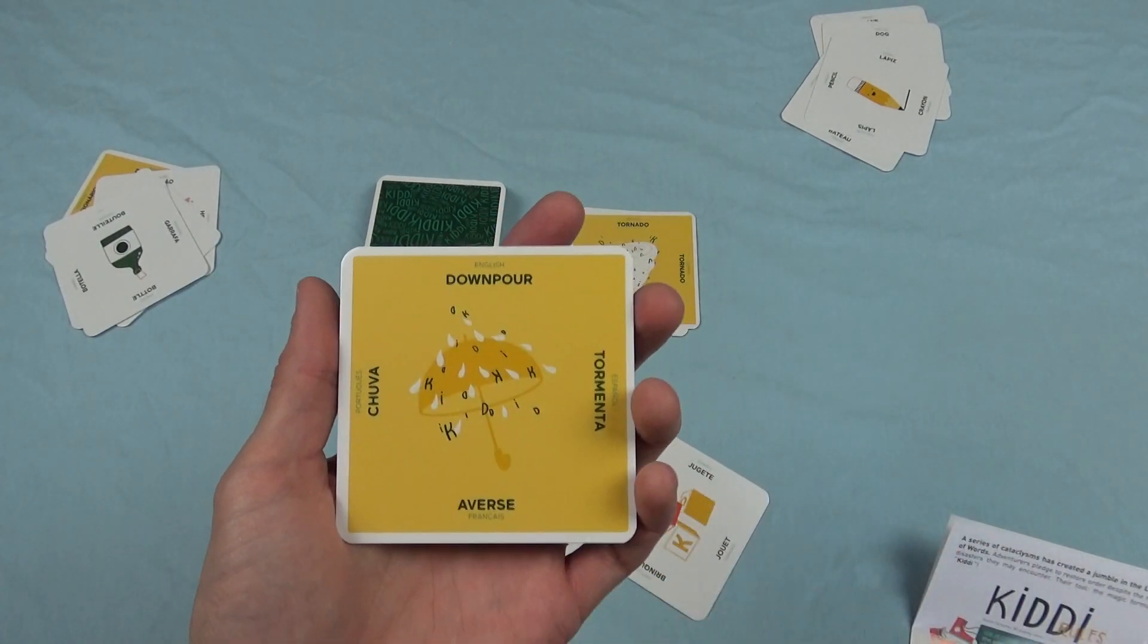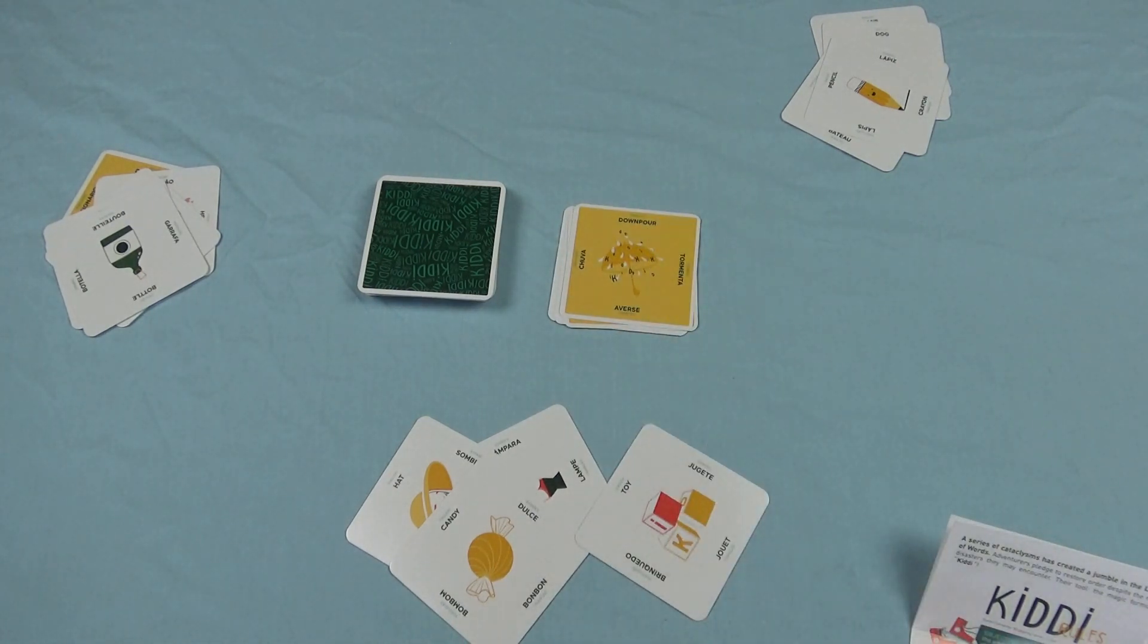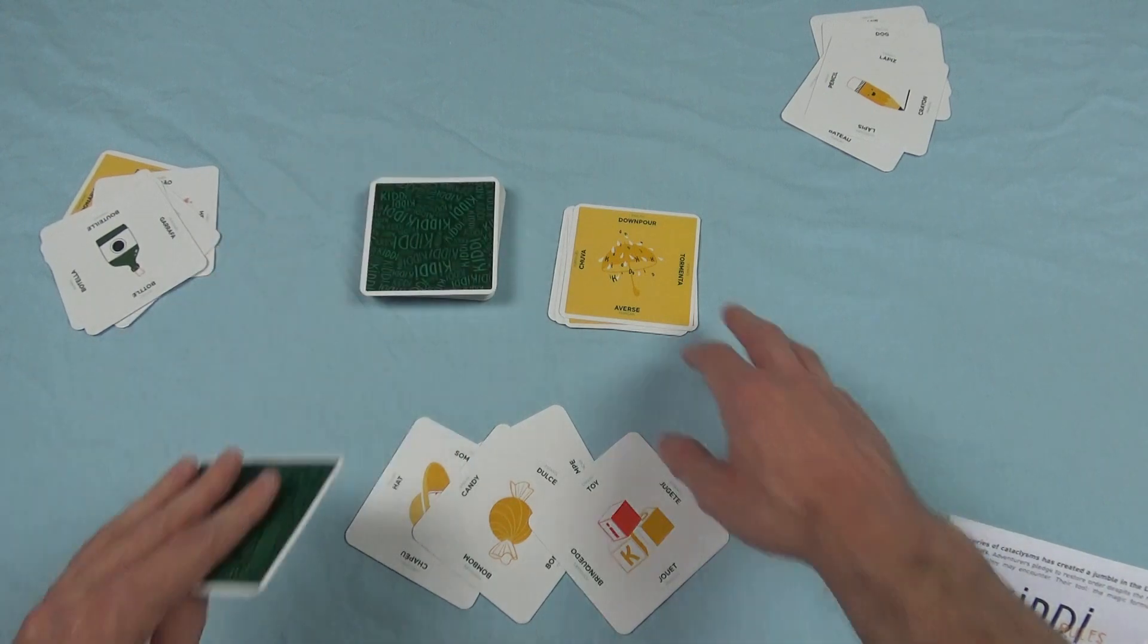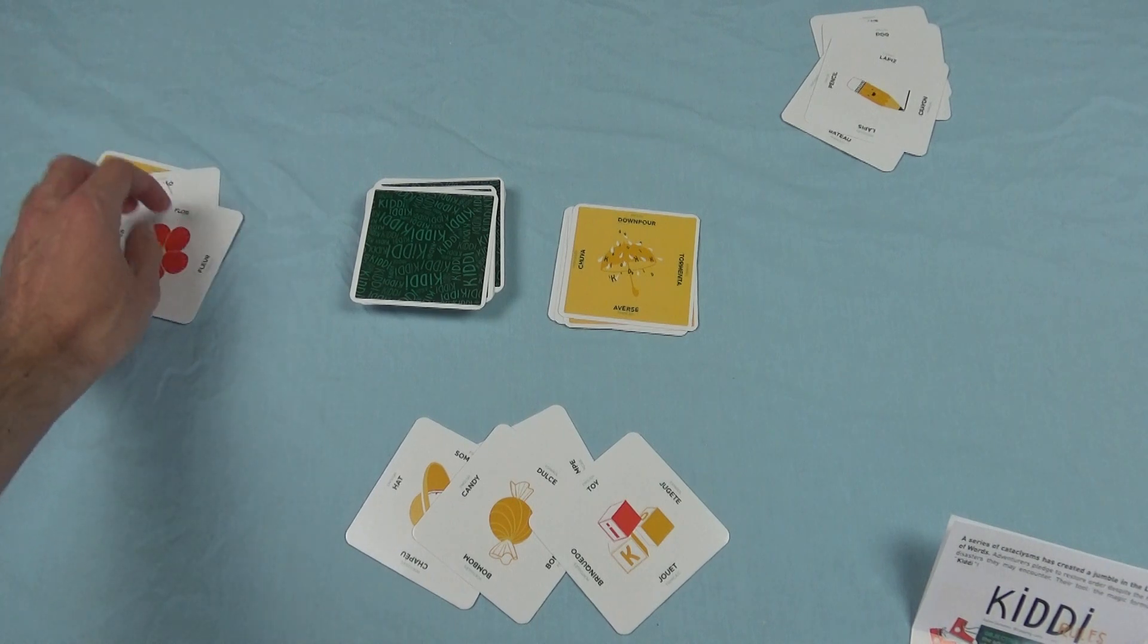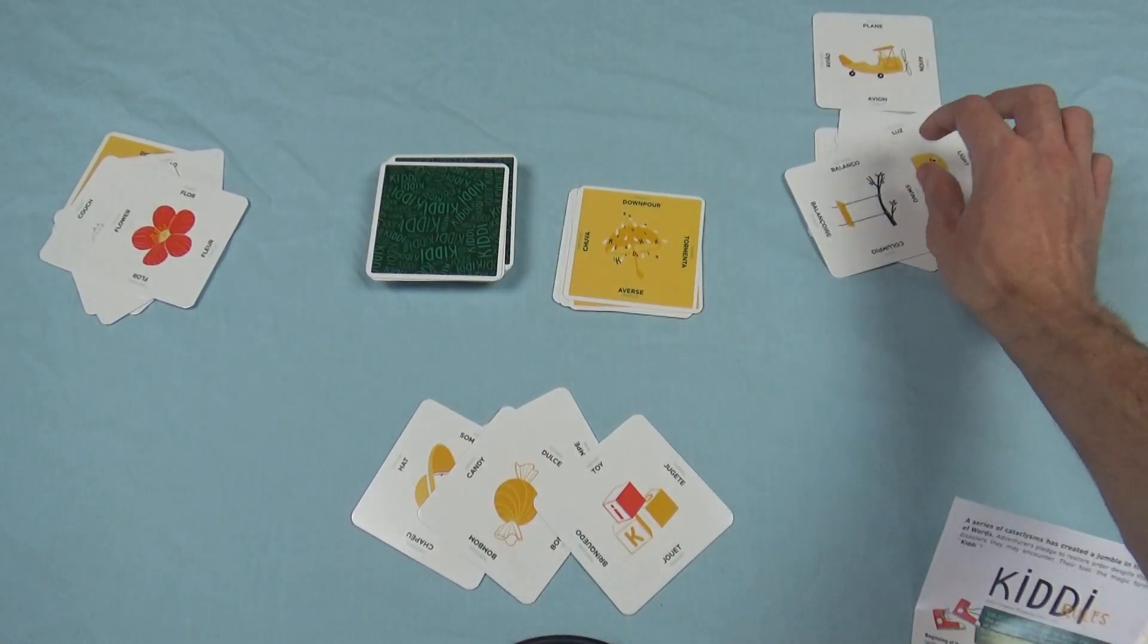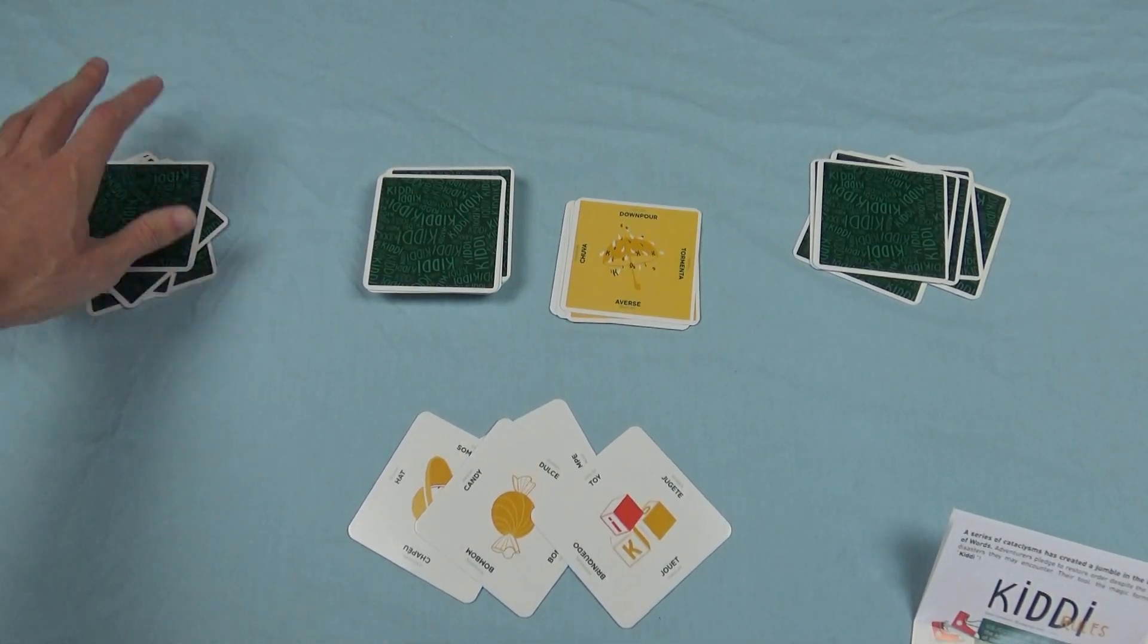Next, we have downpour. If this player plays this card, then all the other players, except him, will have to pick two cards. Because he's protected from the downpour of cards or words. This player takes two cards. This player takes two cards. And usually, they're face down, so the other players can't see your cards.